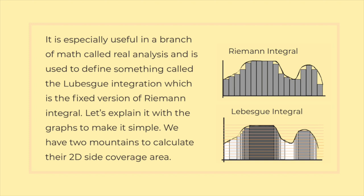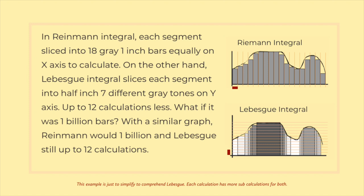Let's explain it with graphs to make it simple. We have two mountains to calculate their 2D side coverage area. In the Riemann integral, each segment is sliced into 18 gray 1-inch bars equally on the x-axis. On the other hand, the Lebesgue integral slices each segment into half-inch bars with 7 different gray tones on the y-axis — up to 12 calculations less.